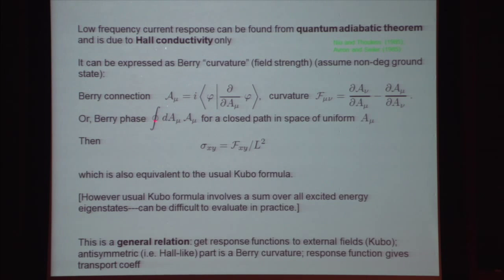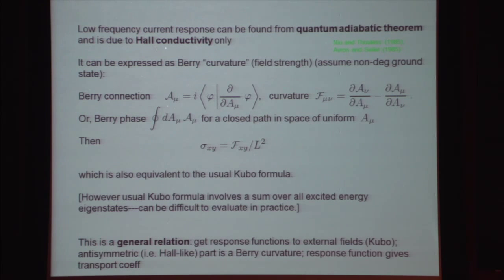The Hall conductivity is essentially this Berry curvature over L squared. This is essentially equivalent to the use of the Kubo formula — a general relation where the anti-symmetric or Hall-like part of the response can be written as a Berry curvature. Alternatively, I could use Stokes theorem in the A space to express the Berry phase as the integral over the interior of the curve of the Berry curvature. This curvature is what shows up as the response function and transport coefficient.